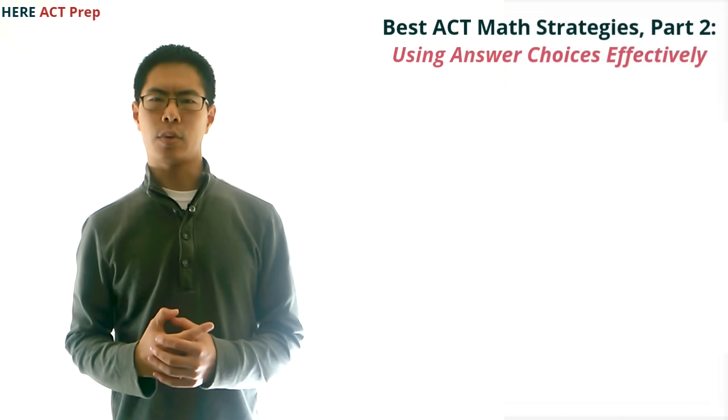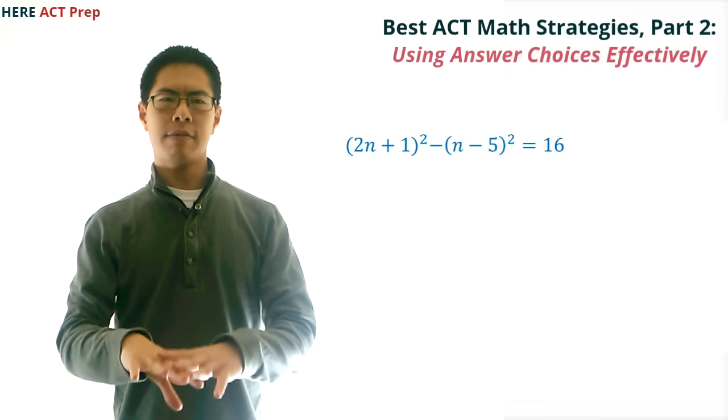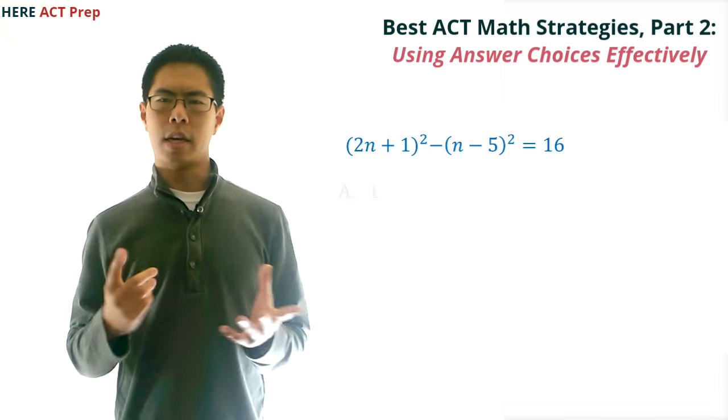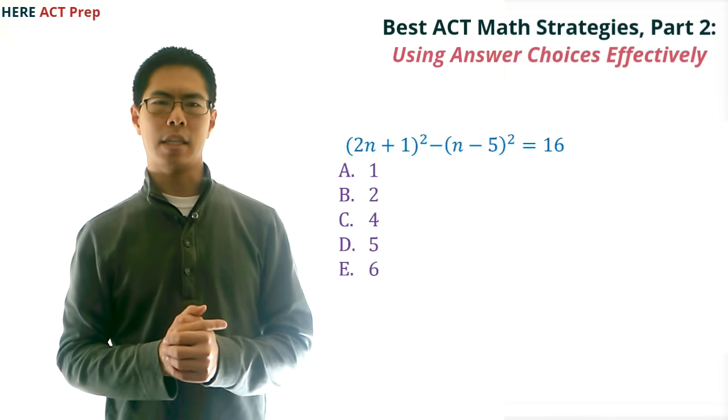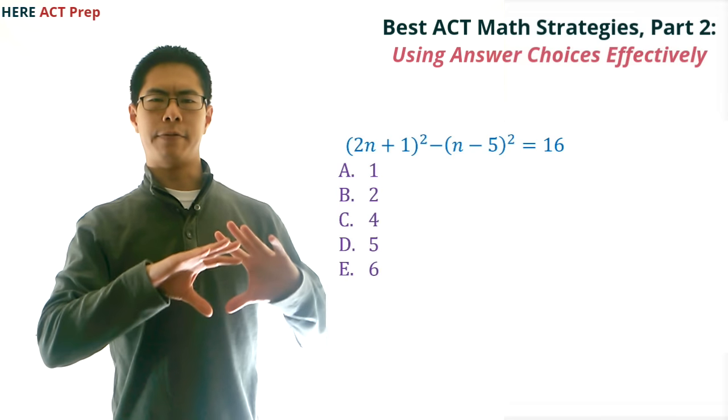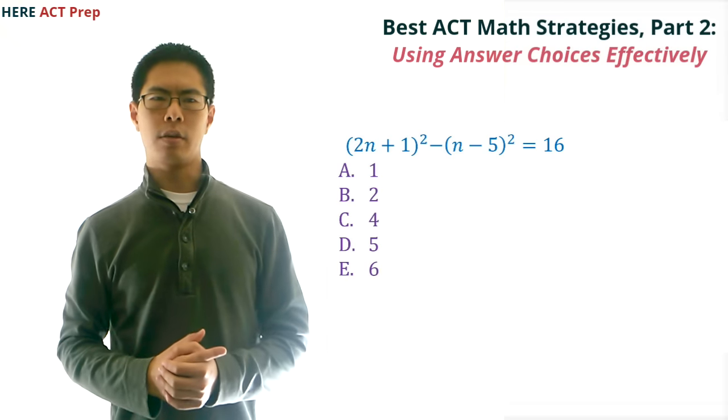First, let's take a look at this question. If (2n + 1)² - (n - 5)² = 16, then what could be a value of n? Our choices are 1, 2, 4, 5, and 6. For this question, we should recognize that it would take quite a while to foil out the entire problem and find the roots, so this would be a perfect question to use the answer choices for.